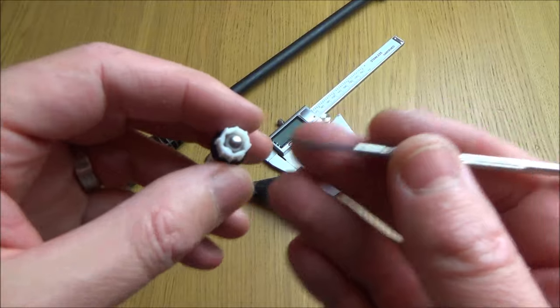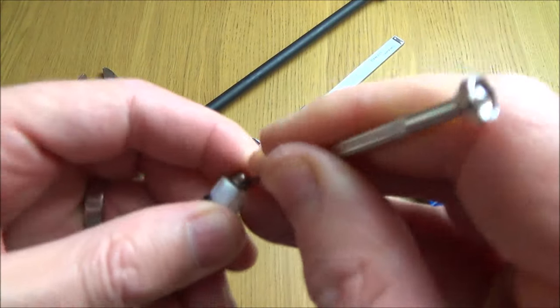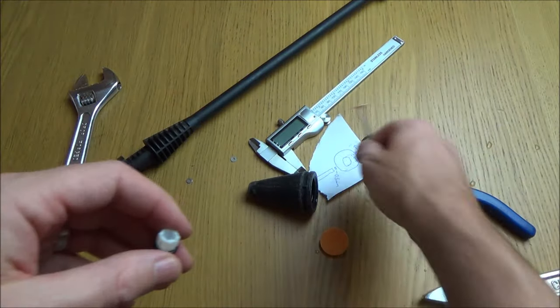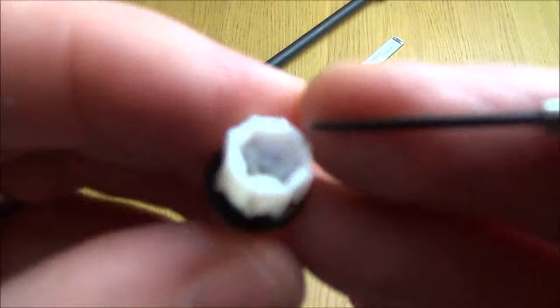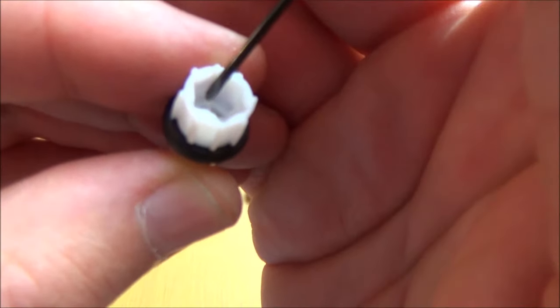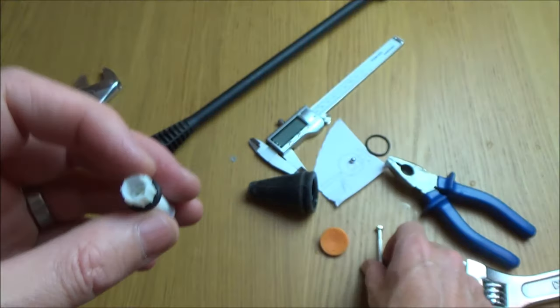Get yourself a very small needle or a very small tiny screwdriver, put it down the side and force out that ball bearing. Now if you have a look in here you will see that the ball bearing just sits on these tiny tiny little legs here, here, here and here and it's these legs that wear down.